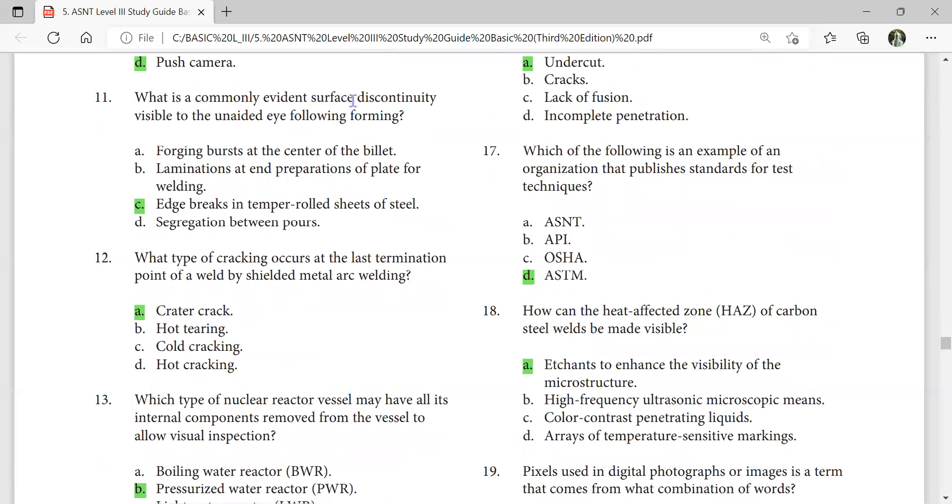What is a commonly evident surface discontinuity visible to the unaided eye following forging? Hairline breaks in tempered rolled sheets of steel. All of these.